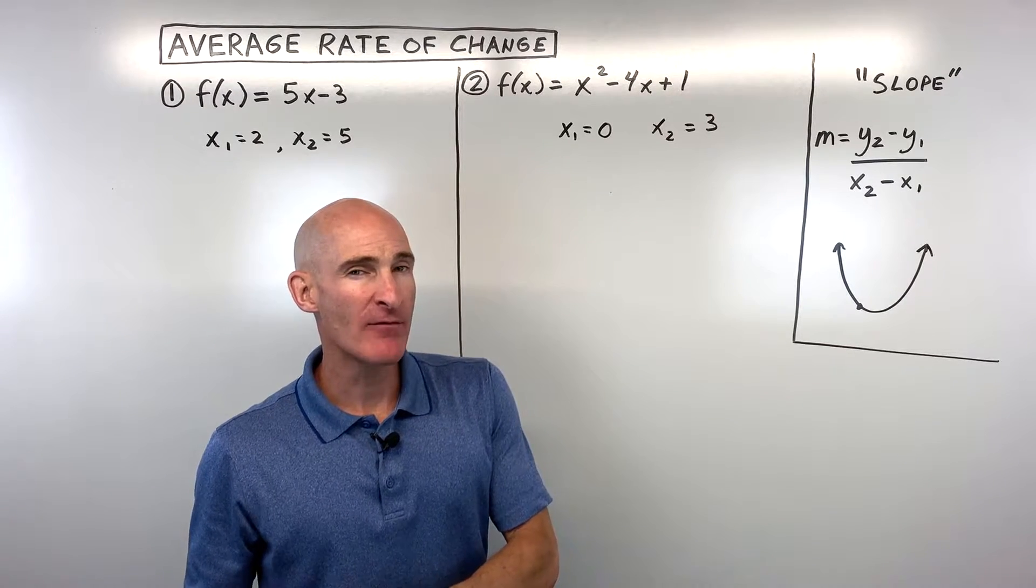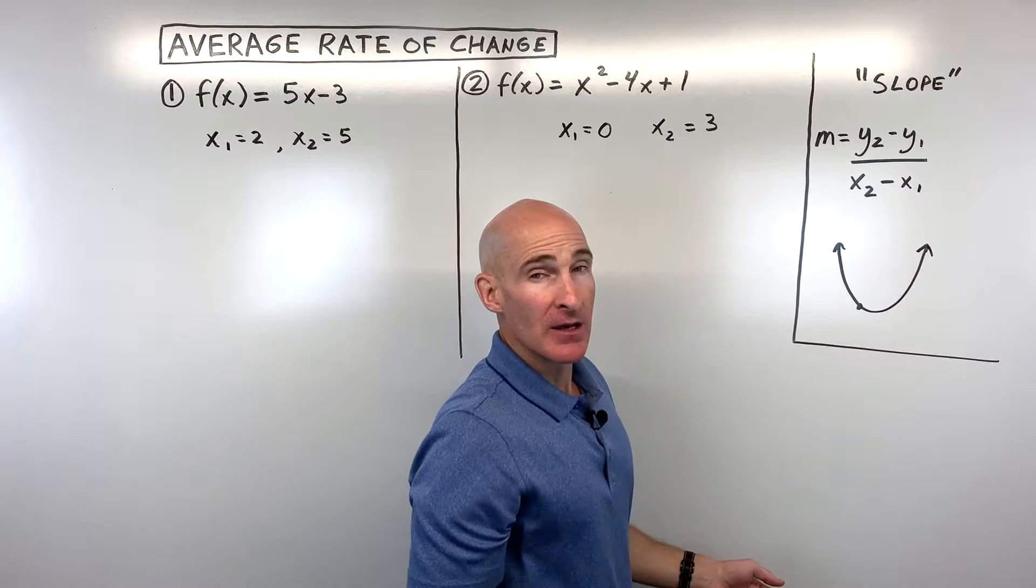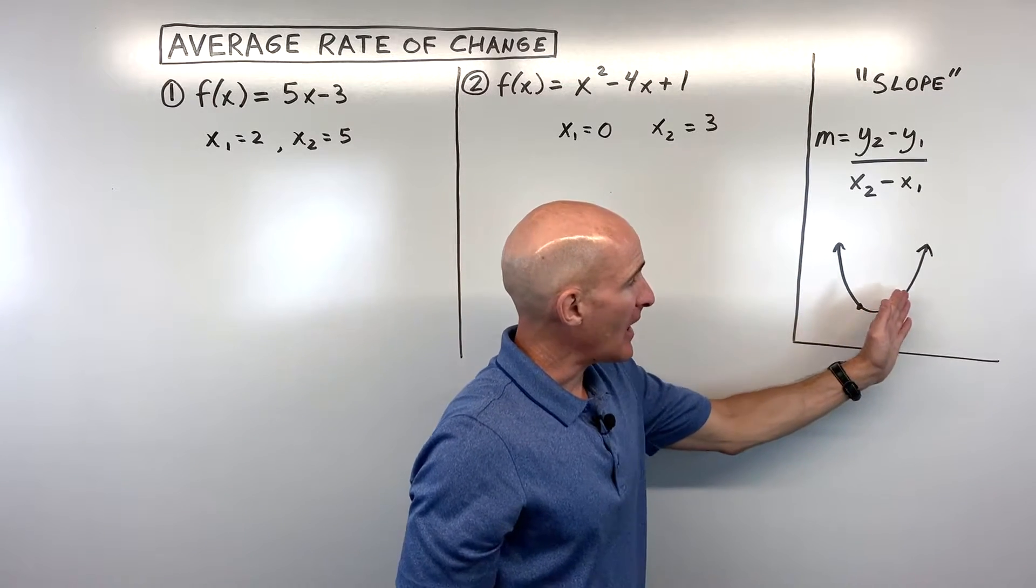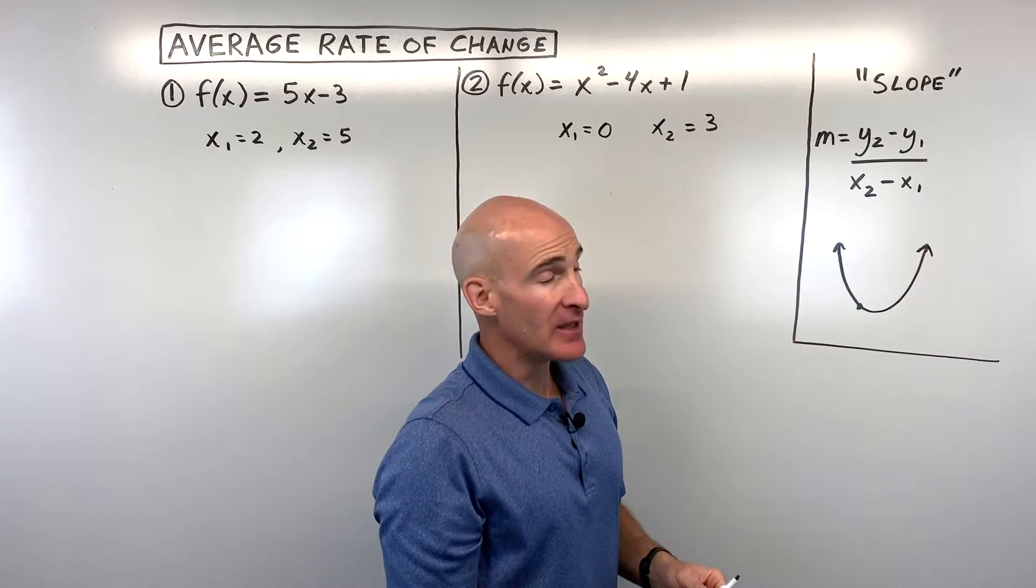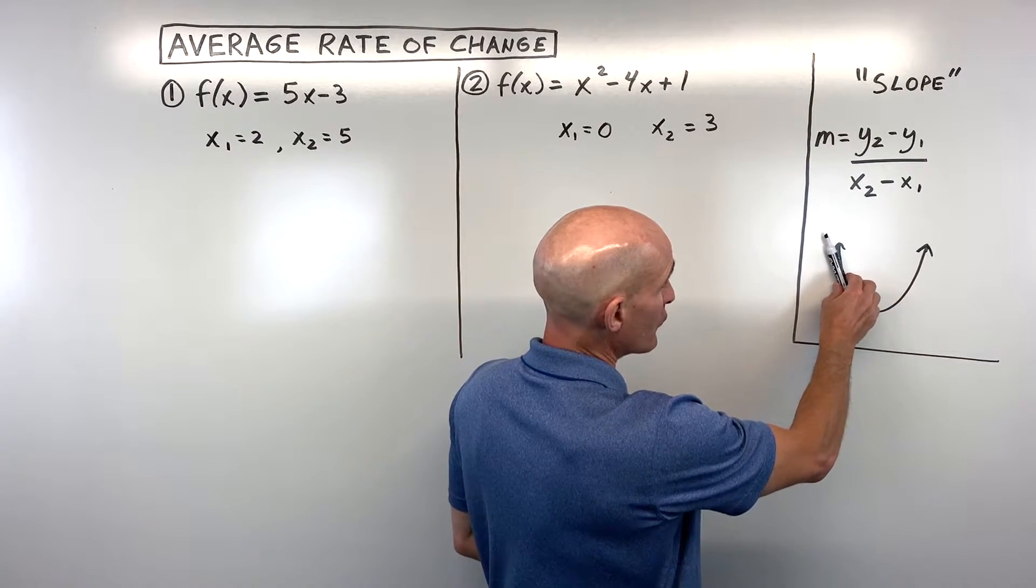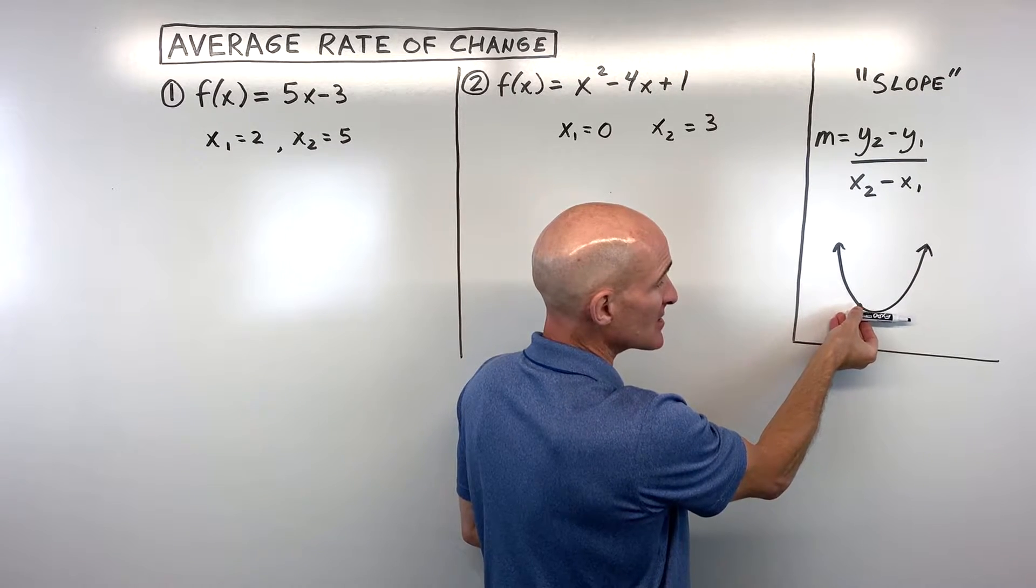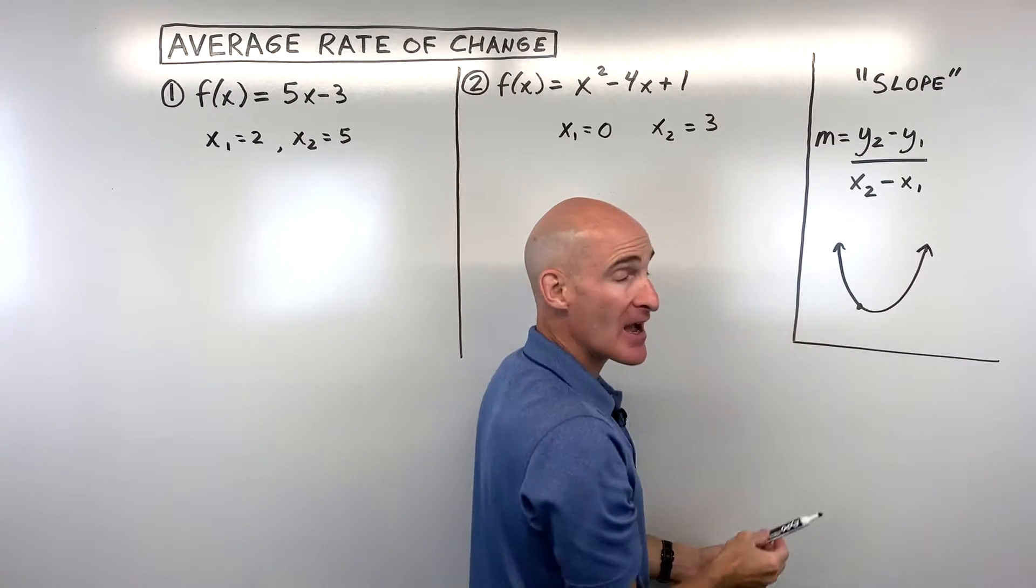Now when we talk about average rate of change, say for example we're working with a graph like a parabola, depending on where you are on that parabola, the slope or the average rate of change may be different. Like if you're over here, you can see we have a negative slope. If you're over here, you can see we have like a zero slope. If you're over here, we have a positive slope.